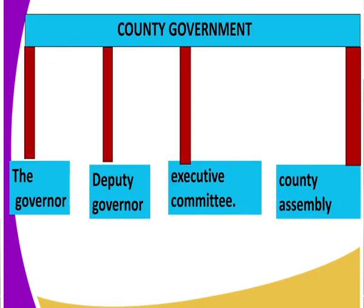Now let's look at the county government. What does it comprise of? The county government comprises of the governor, who is the CEO of the county, then the deputy governor, the executive committee — also known as the county CECs — and lastly, the county assembly. The county assembly is the legislation organ of the county government, where the Members of County Assembly, known as MCAs, sit and legislate.